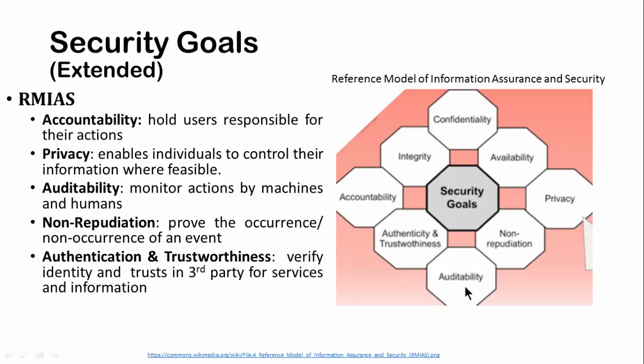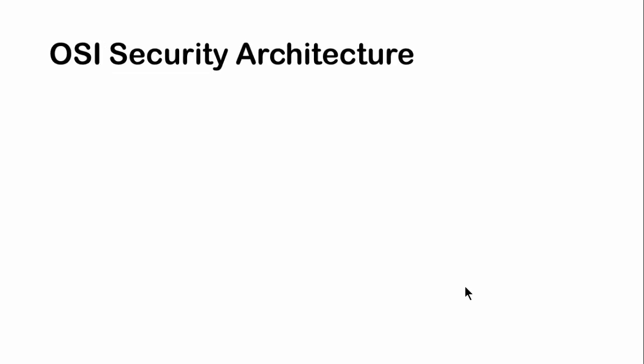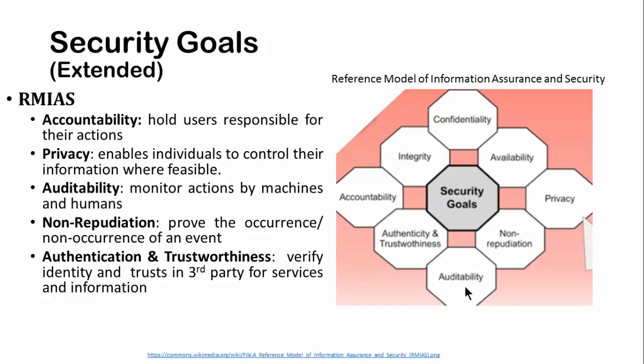For example, someone borrowed 500 rupees from me and later denied it - he is denying an event that occurred. With the help of a third party, if I can prove non-repudiation and the occurrence of the event, that person is at fault and must return the money. Authentication and trustworthiness means you are able to verify the identity of the person creating or reading the message, or identify whether a third party is trustworthy, and accordingly decide whether to use their services or information. All five additions have been made to the security goals through the RMIAS model. For OSI architecture I'll be making a separate video, so thank you for now.